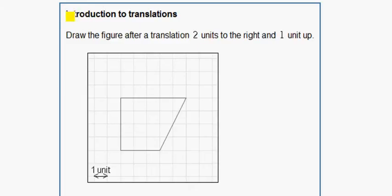In this problem we are working with introduction to translations. Draw the figure after a translation two units to the right and one unit up. Each square is one unit.